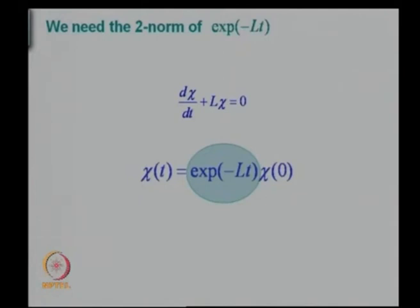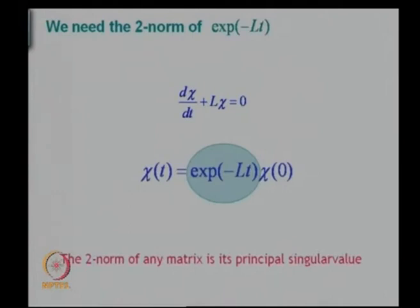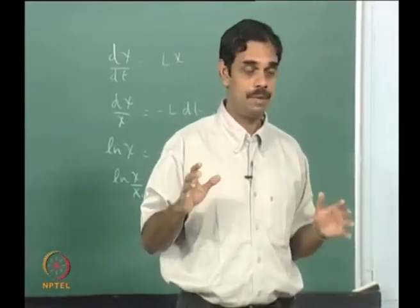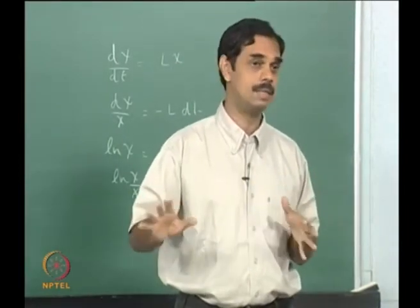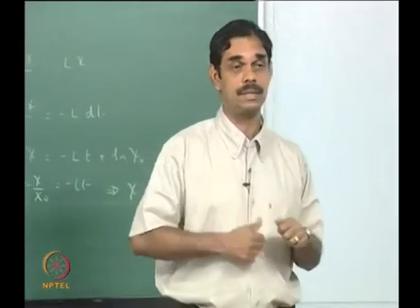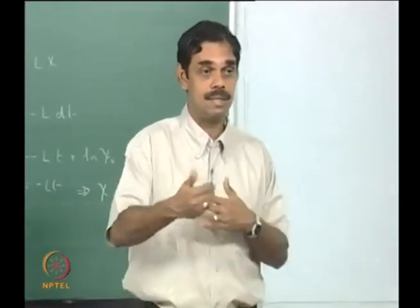There is a two-norm for matrices also, which is defined as the principal singular value. Singular value is an abstract thing, principal singular value is another abstract thing, and norm is another abstract thing. It is our job to find the right abstract thing and apply it to the physical problem. From the numerical simulations and the stories told earlier, you can have eigenvectors decaying but in some direction you can still have growth. So growth has to be measured in some energy norm.